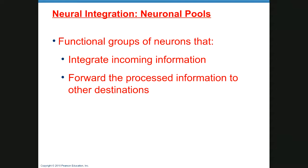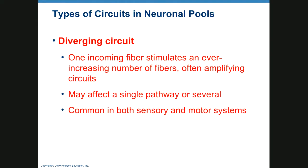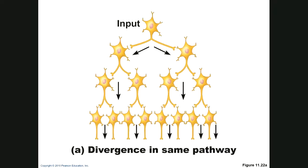The last topic for Chapter 11 is neural integration — the pathways neurons form to relay information or commands. In a divergent pathway, information spreads from one neuron to two, then to two more each, and so on, passing information to more and more neurons. This amplifies the signal. The information is sent to an increasing number of neurons toward the part of the brain receiving it.